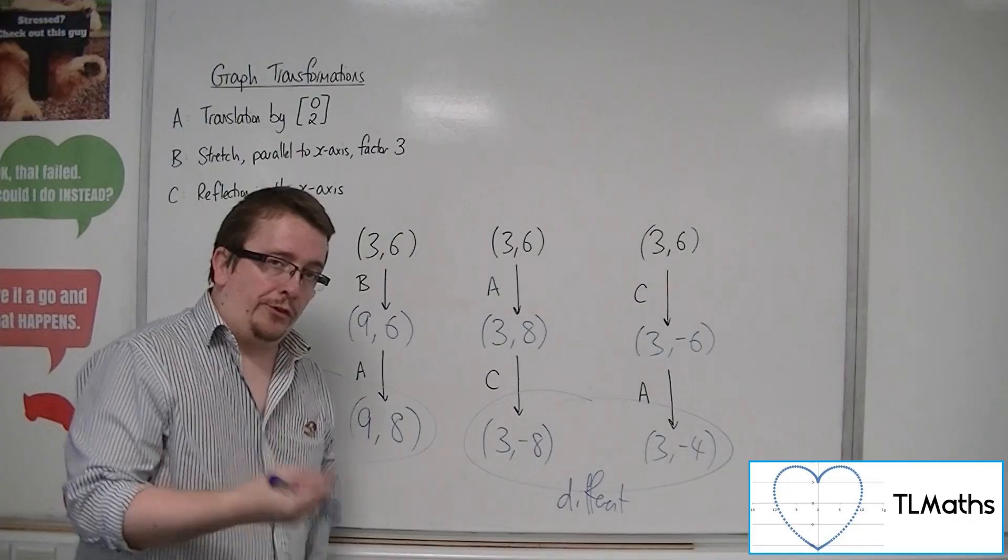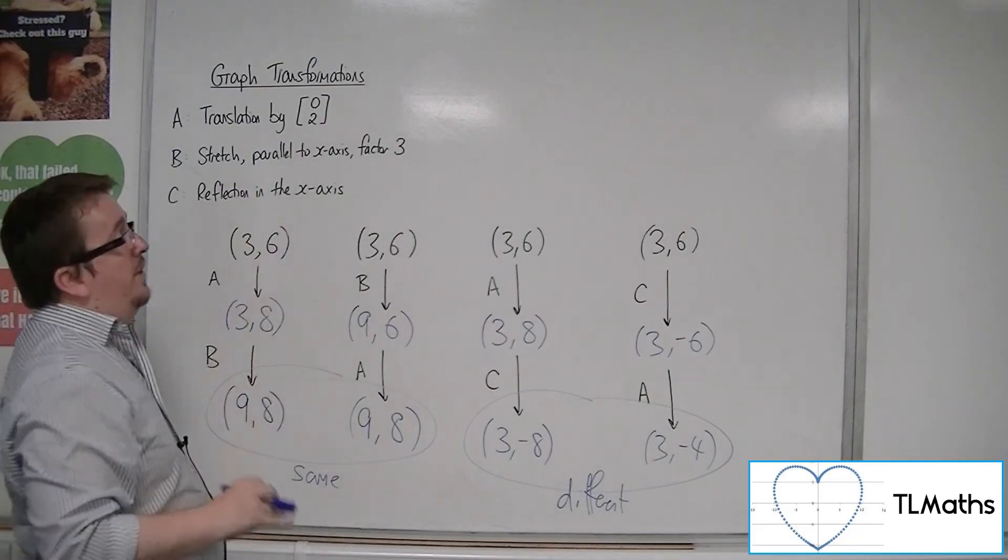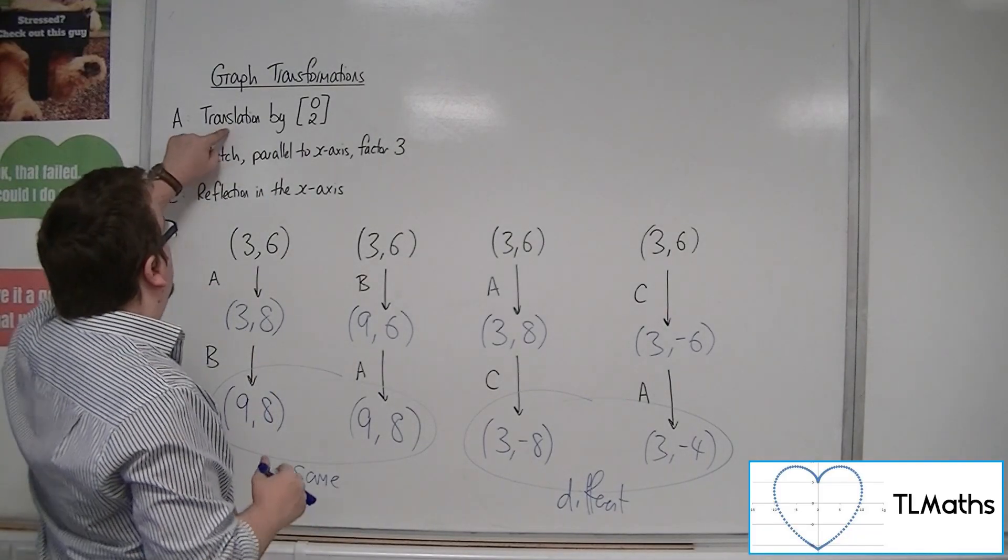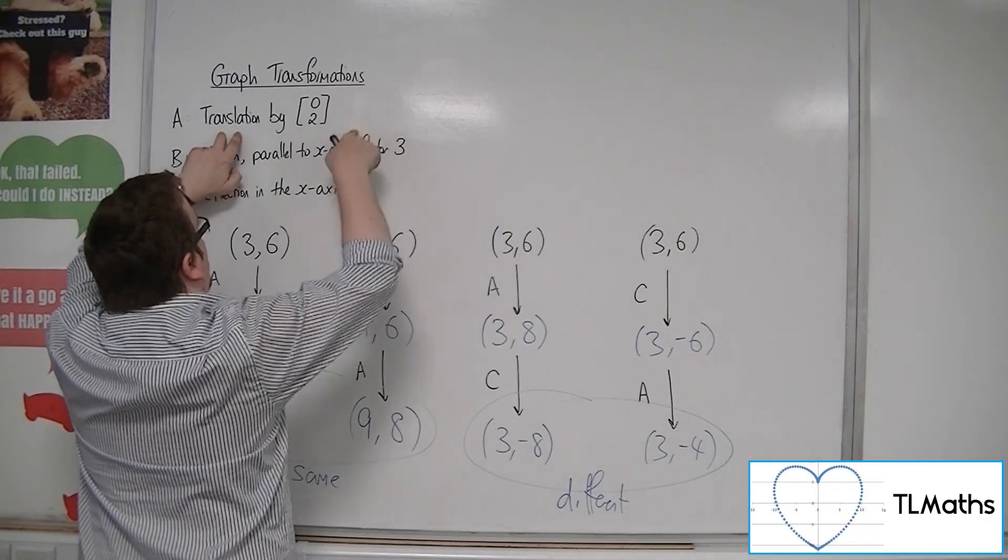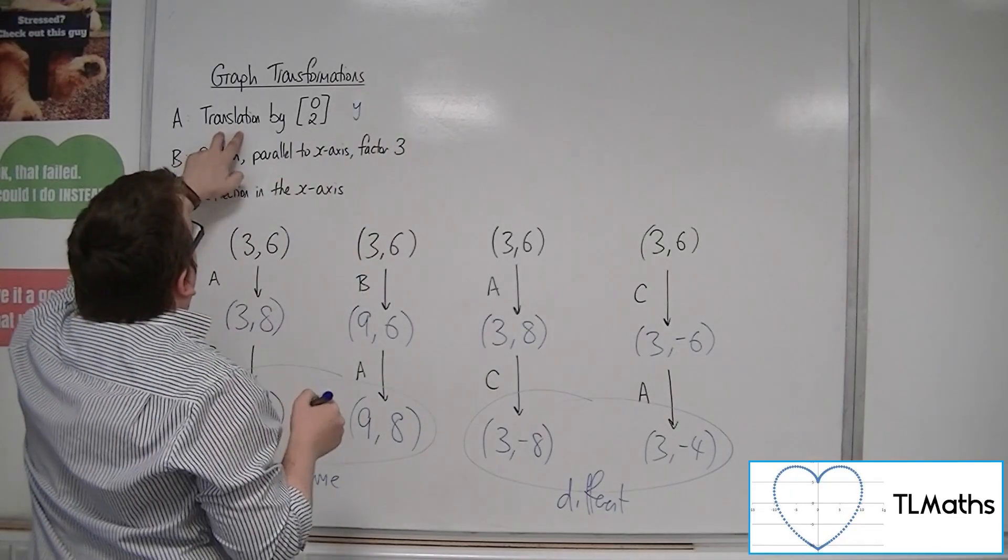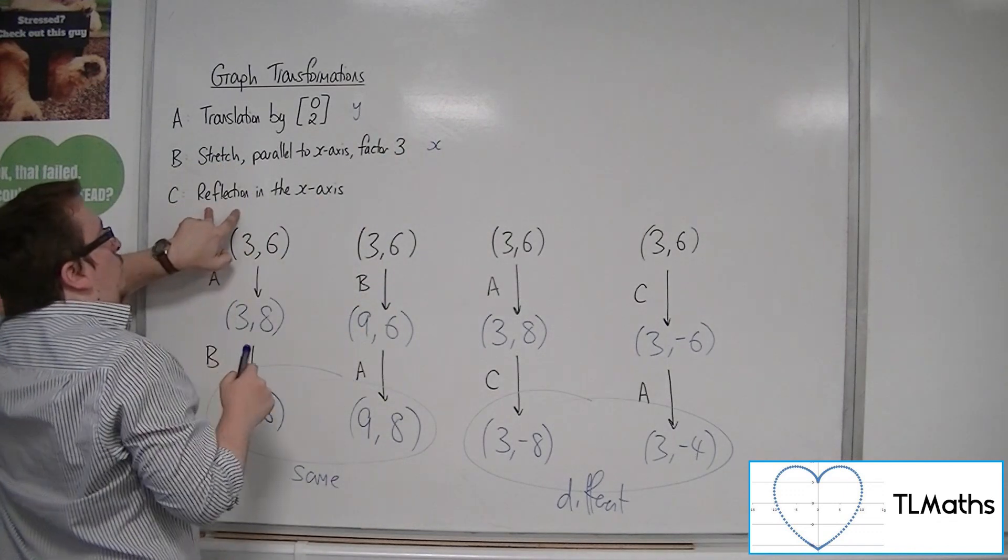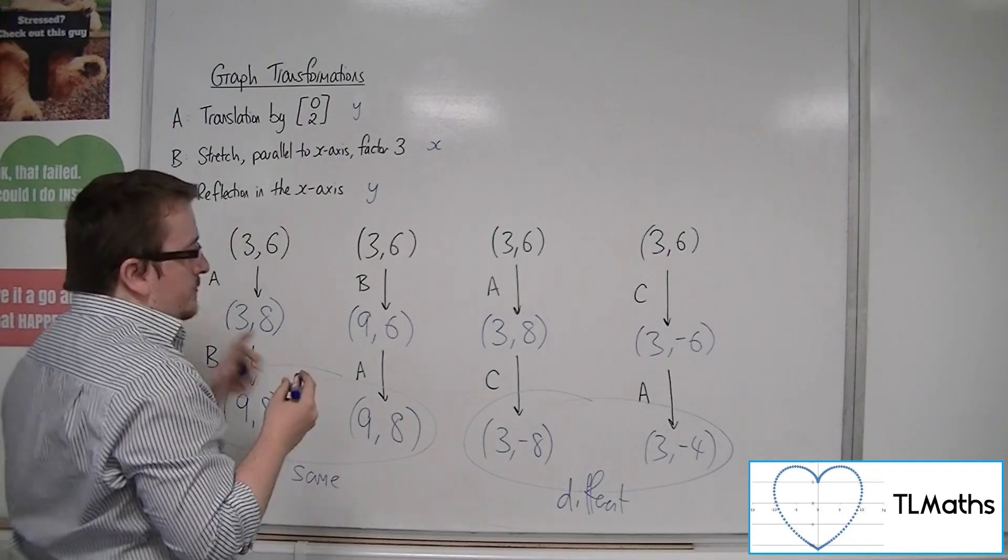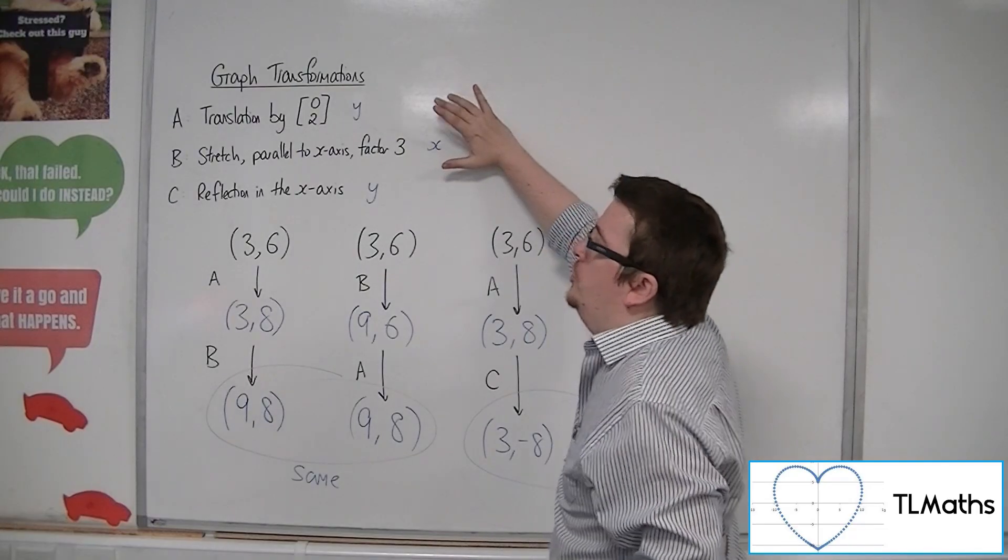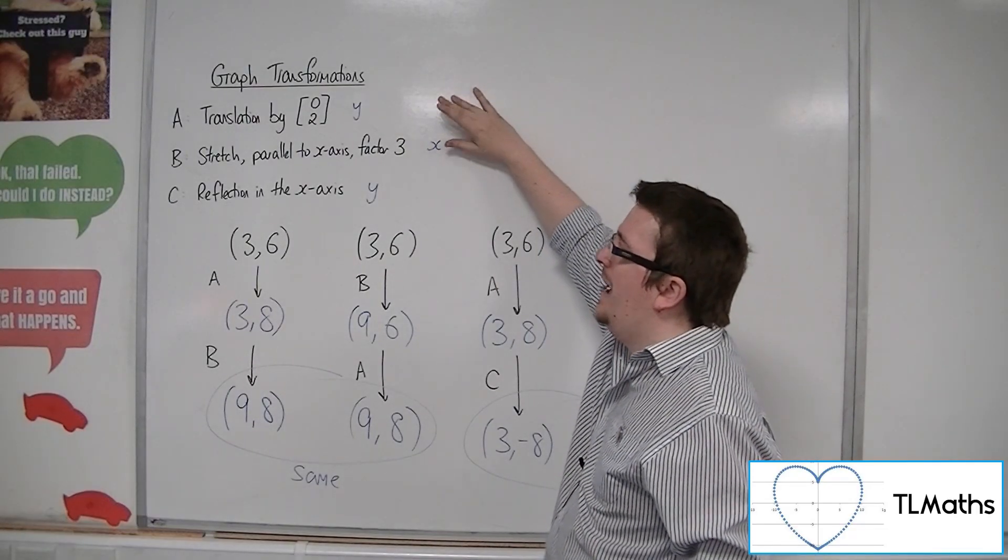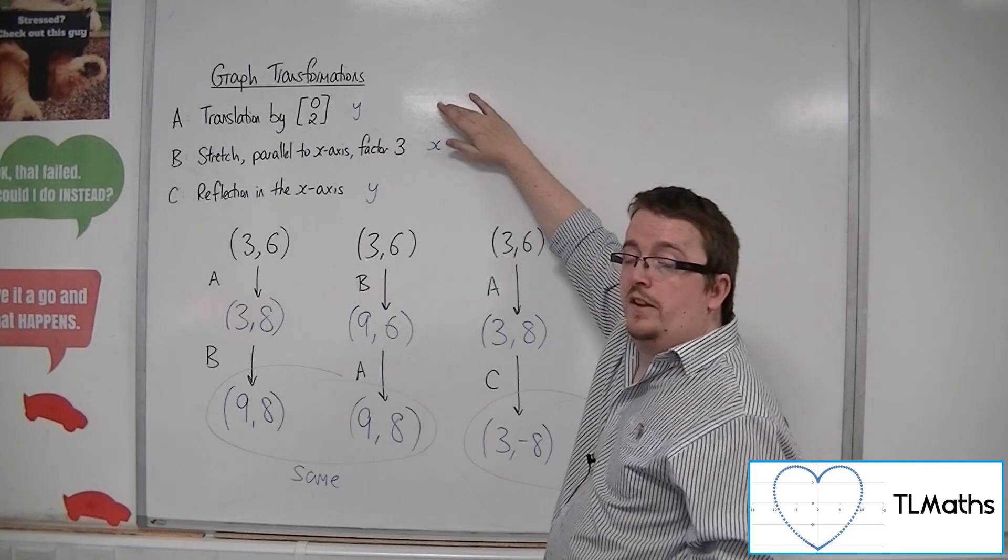Now, what could be causing this? Well, you should notice from the transformations that I've selected, this one, translation by (0, 2), only changes things in the y-direction. That changes the y-coordinate. B will only change the x-coordinate. And C will only change the y-coordinate. So, when I had a transformation where one was occurring just in the y-direction and one was just in the x-direction, that, order-wise, didn't make any difference.